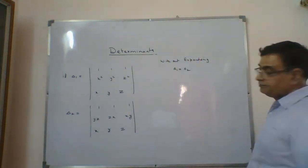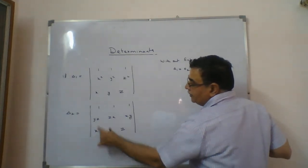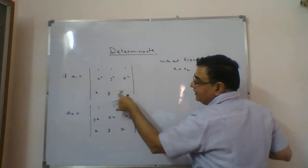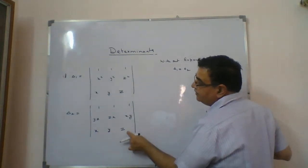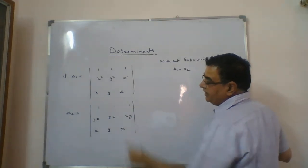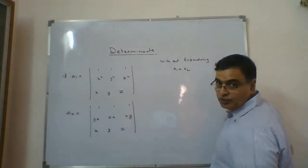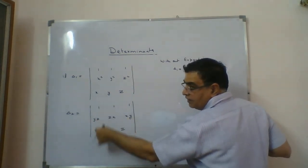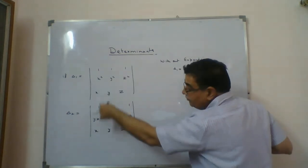I'll start with delta 2. In delta 2, I need 1, 1, 1; x², y², z²; and xyz. xyz is there, 1, 1, 1 is there, but x², y², z² is missing. So what I do in this case — I will work with the first column.